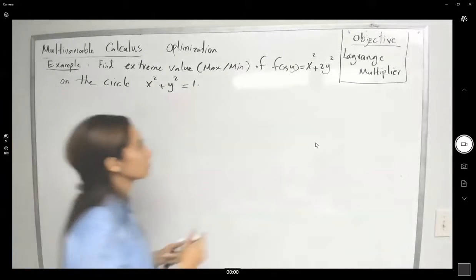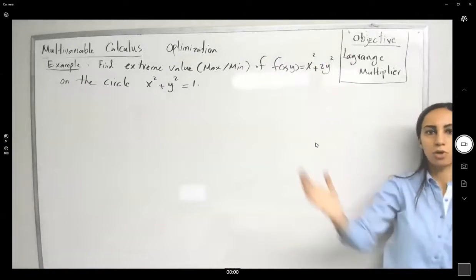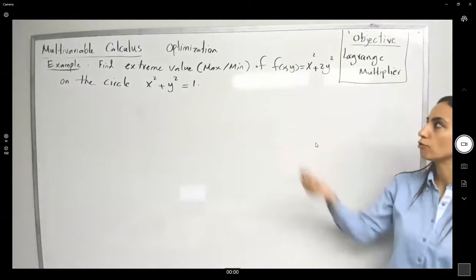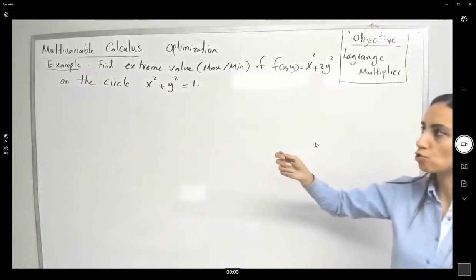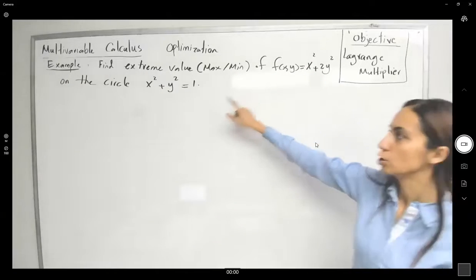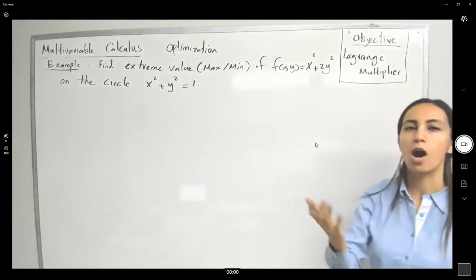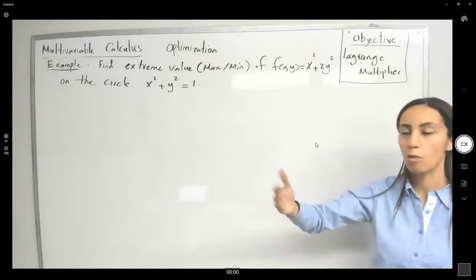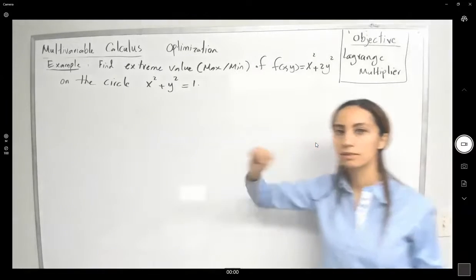We have a function whose graph has a minimum. The constraint x² + y² = 1 is a circle. We are trying to cut this function using this fixed circle and find the optimal value — what is the maximum and what is the minimum value of the function over this circle?